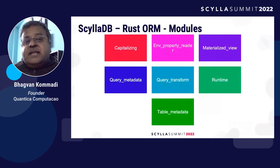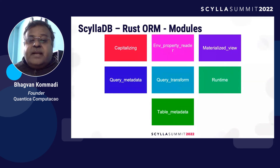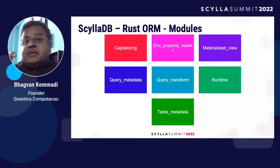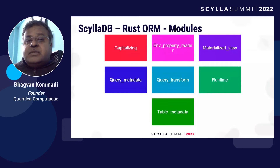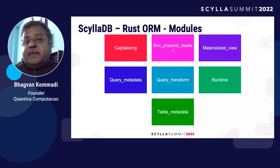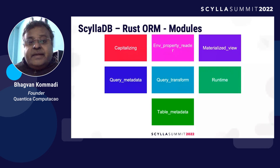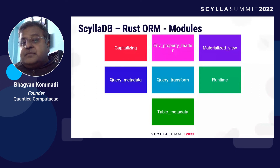What are the modules within ScyllaDB and the Rust ORM? There's capitalization, environment property reader, materialized view, query metadata, query transform, runtime, and table metadata. The table metadata keeps information mapping the Rust struct to the data table it accesses. Query metadata is about the SQL query — are you doing a select, a group by, an update, a create, read, update, or delete? The query metadata holds all that information.